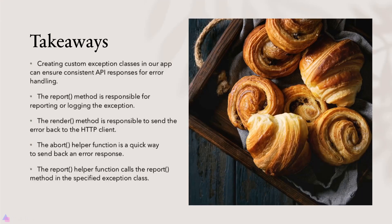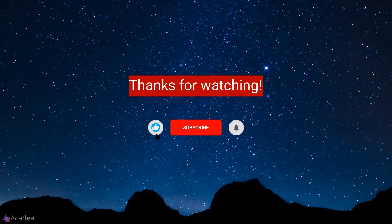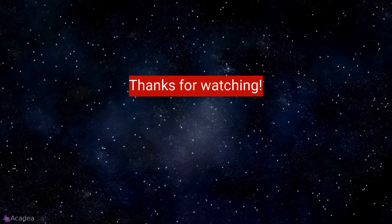Key takeaways for this lesson: Creating custom exception classes ensures consistent API responses so clients always expect the same error format. The report method is responsible for reporting or logging the exception. The render method sends the error back to the HTTP client. The abort() helper is a quick way to send a one-off error response. The report() helper calls the report method in a specified exception class. That's it for this lesson — if you enjoyed the content, hit like, subscribe, and the bell icon.